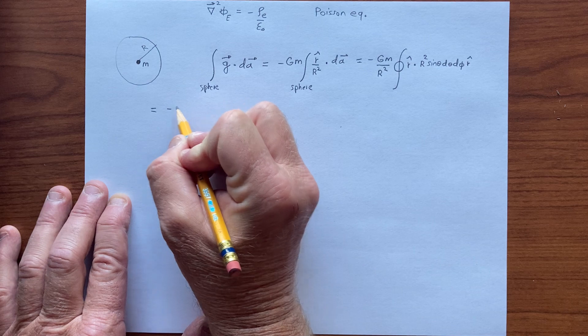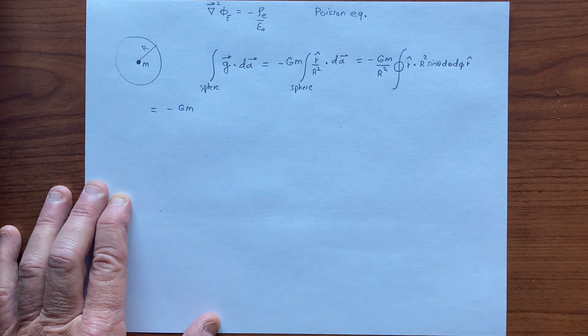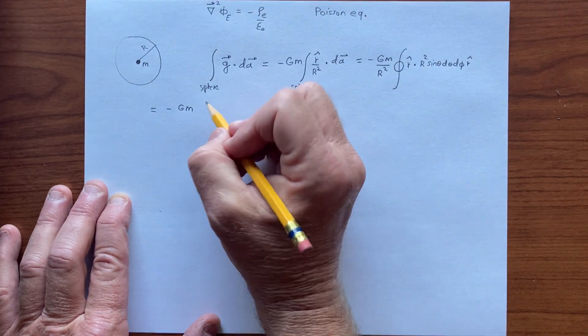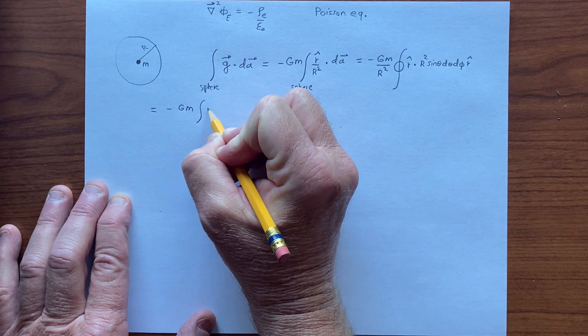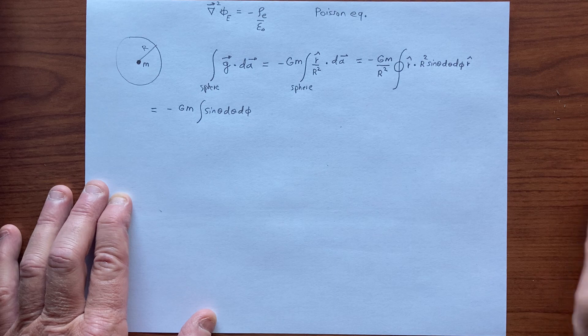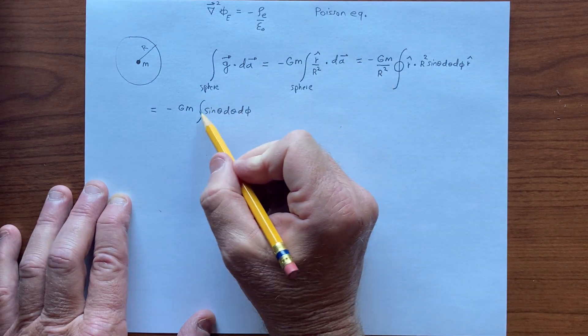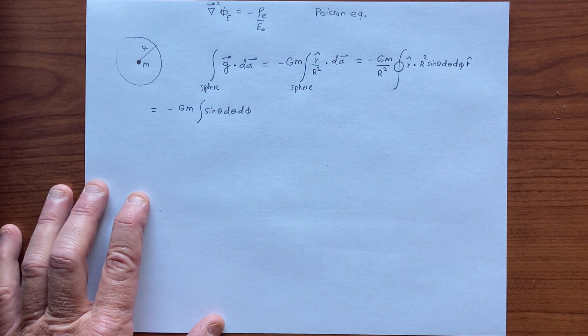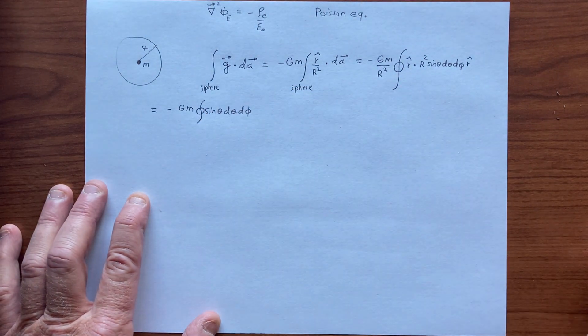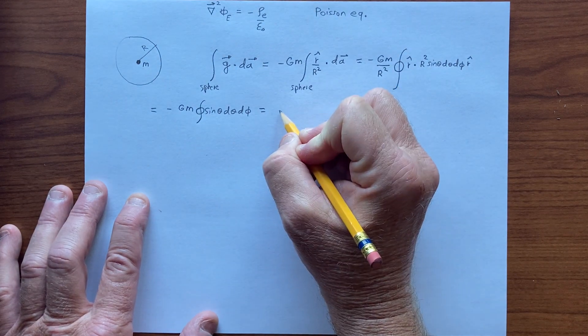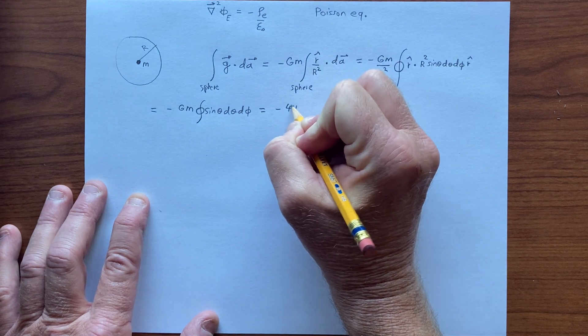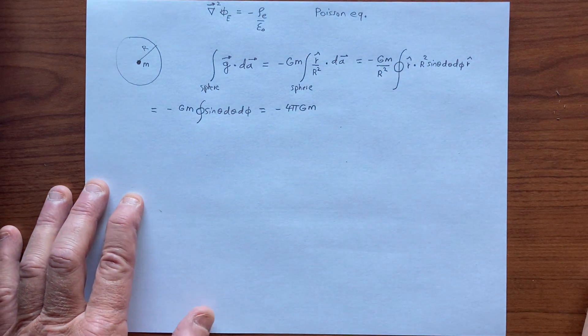and this gives us minus gm. The r squared cancel. We have sine theta d theta d phi. We really should put two integrals there. Of course, it's a surface, so it's a double integral in theta and phi. Again, let's put closed surface there. And this gives us minus gm, and we get 4 pi from that. So we get minus 4 pi gm as the result of that.